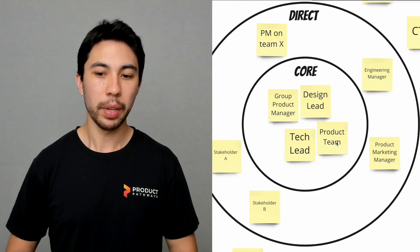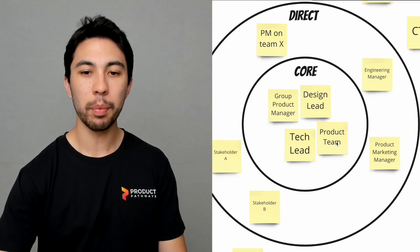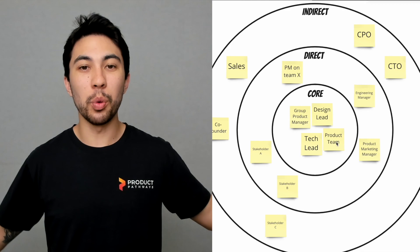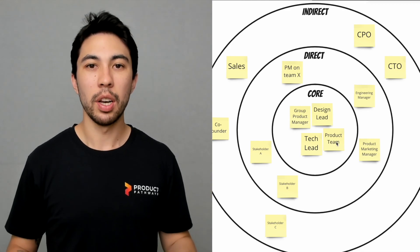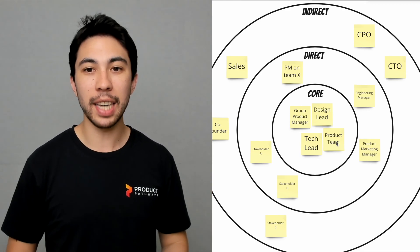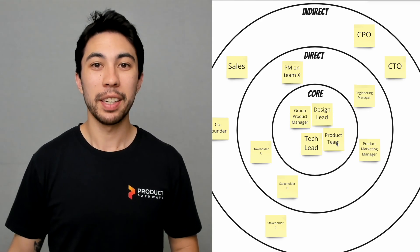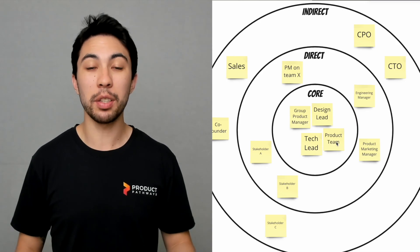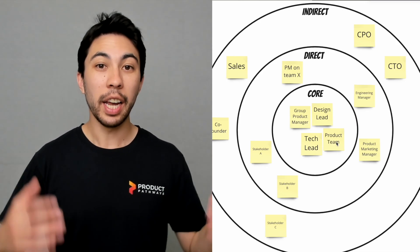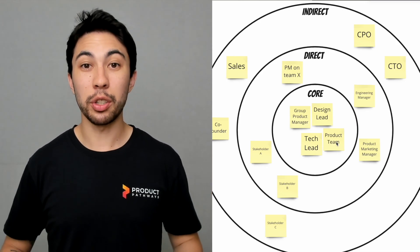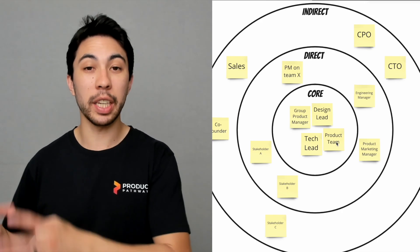Then as we zoom out even further, we end up with the final circle, which is our indirect stakeholders. These are people who aren't involved day-to-day and your work is kind of on the periphery. They like to be updated every now and then, but they don't need to be across every single decision or every single thing that's going on. It's just more of an FYI—I want to keep you informed.